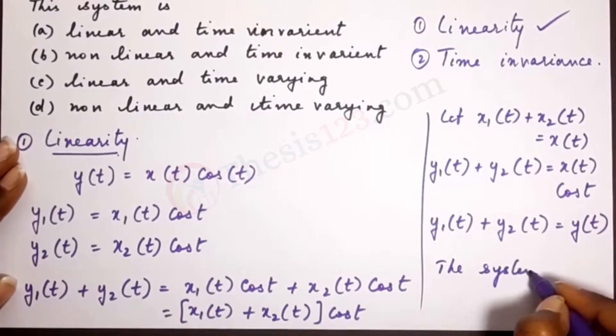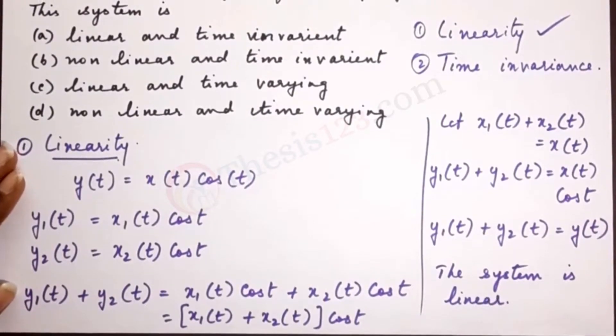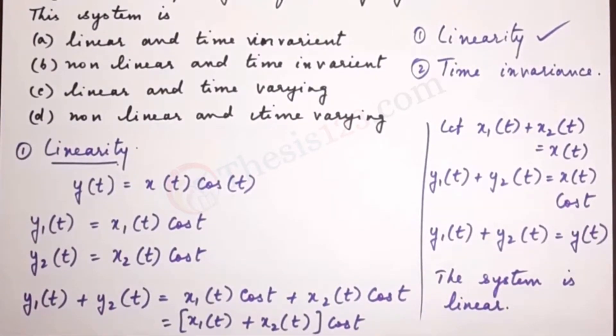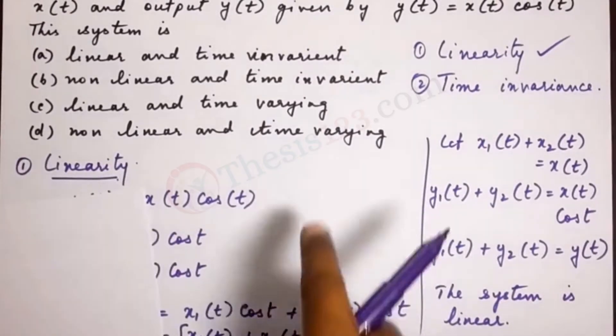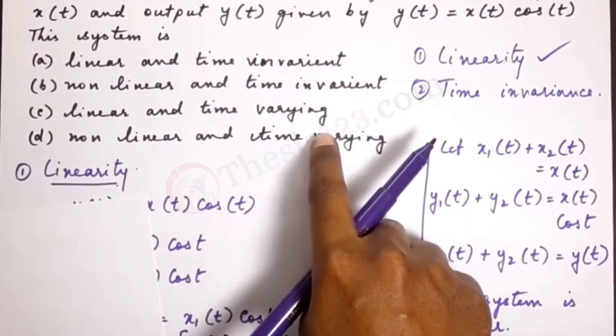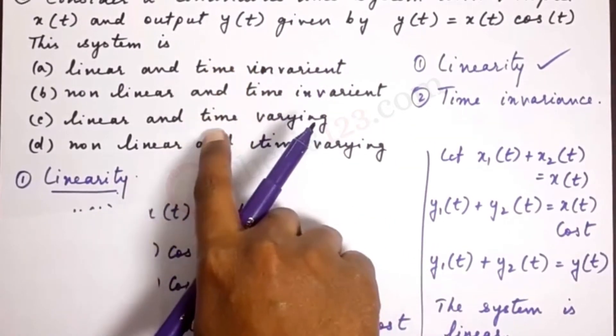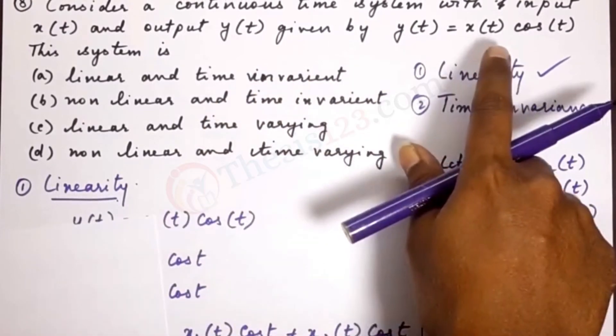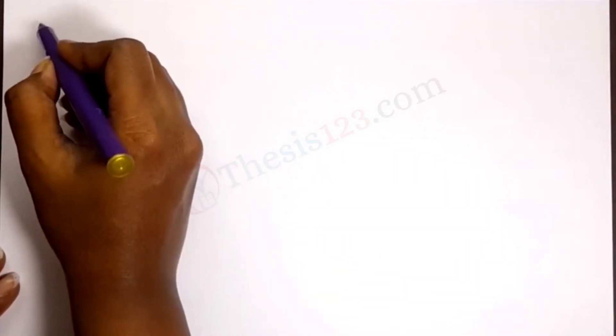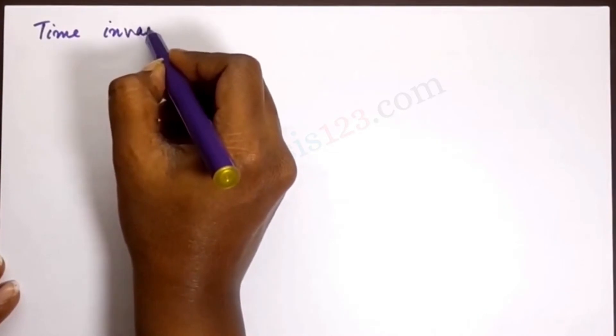The system is linear. Now let's check time invariance. Because the system is linear, that removes two of the options, leaving us with either option A or option C. We need to determine whether the system is time invariant or time varying — that is, whether applying a time delay to the input still produces the same overall response.